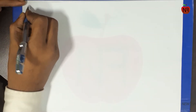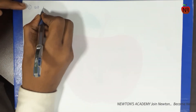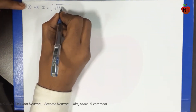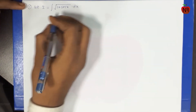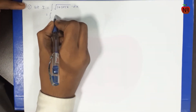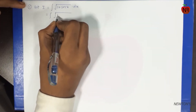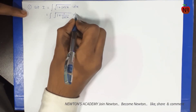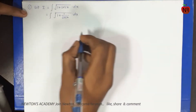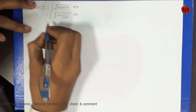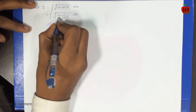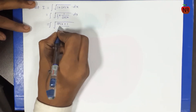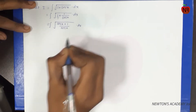Number 1. Let I be equal to integration of √(1 + sec x) dx. Integration of √(1 + sec x) — sec x ka formula hai 1/cos x into dx. Ab is me cross multiply karunga: cos x + 1, divided by cos x, into dx.